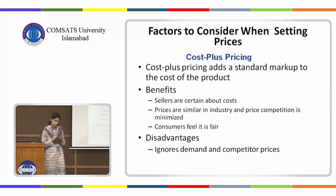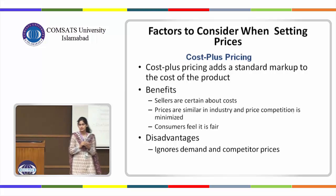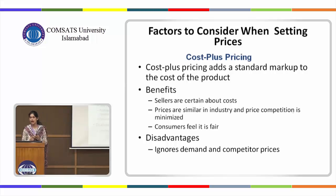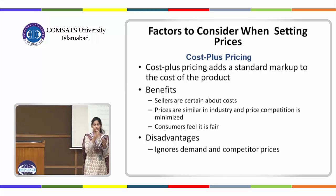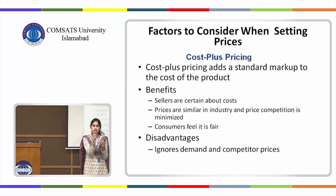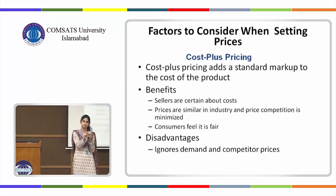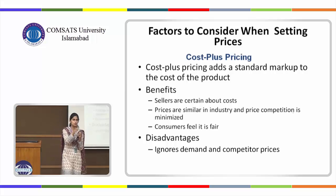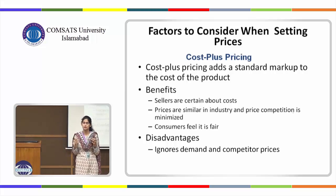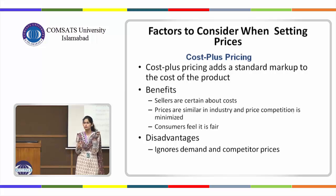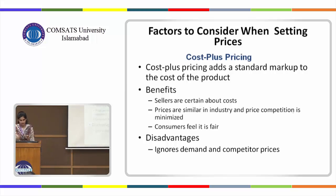Cost-plus pricing is a pricing technique where you add a standard markup to the cost of the product. For example, if the cost is 100 rupees to produce a particular product and you add a markup of 0.2, that 0.2 would be your profit — so 20% of 100 is 20 rupees. The price at which you would offer the product in the market would be 120 rupees — the 100 is cost recovery and the 20 is profit.